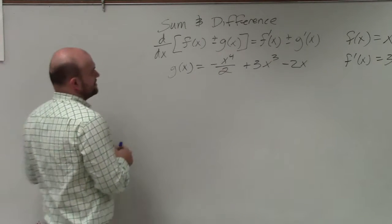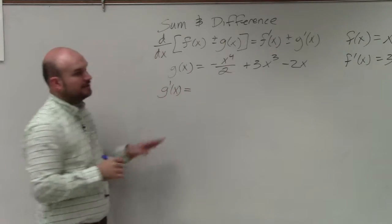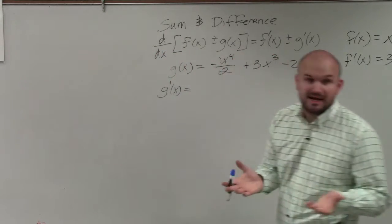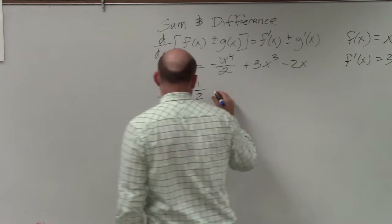Alright, one last time let's break this down. If I want to figure out g prime of x, I see there's a constant in front here, so by using my constant multiple rule I can basically take this as one over... x over...